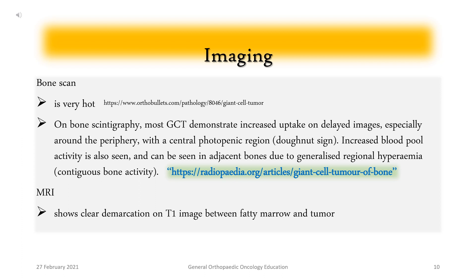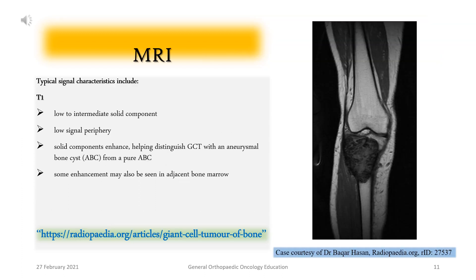MRI: It shows clear demarcation on T1 images between fatty marrow and tumor. Typical T1 signal characteristics include low to intermediate signal in the solid component and low signal at the periphery. Solid components enhance, helping distinguish GCT with an aneurysmal bone cyst (ABC) component from a pure ABC. Some enhancement may also be seen in adjacent bone marrow.